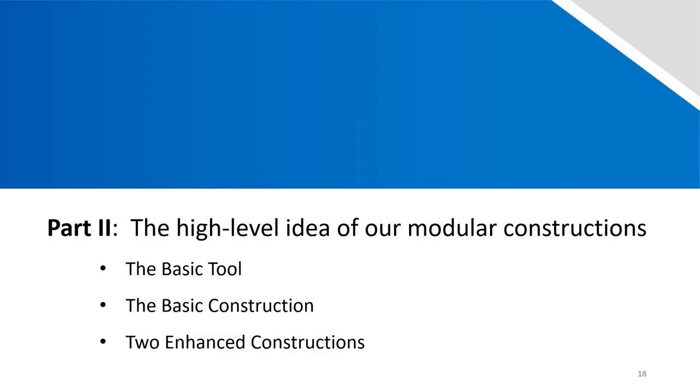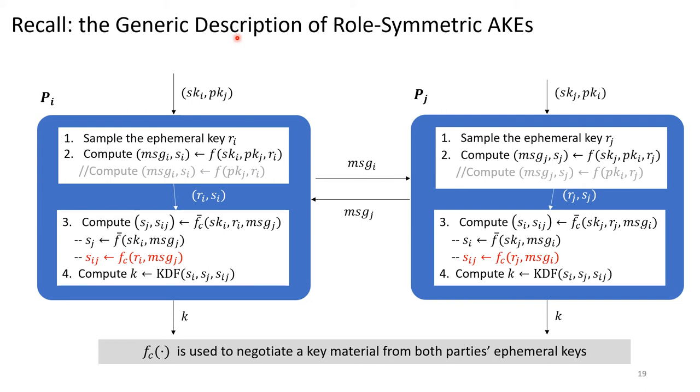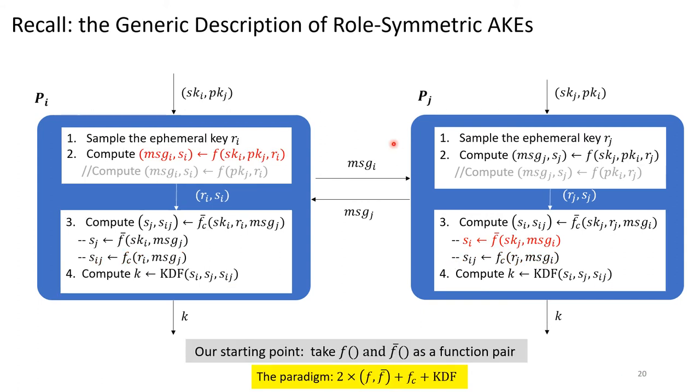Next, I will introduce the high-level idea of our modular constructions. Recall the generic description. Here, FC is used to negotiate a key material from both parties' ephemeral keys. Giving a secure implementation for it is enough to achieve weak PFS. Then, we take F and F-bar as a function pair. The paradigm of role-symmetric AKEs can be described as two times F, F-bar plus FC plus KDF. How to securely implement such a function pair becomes our starting point.